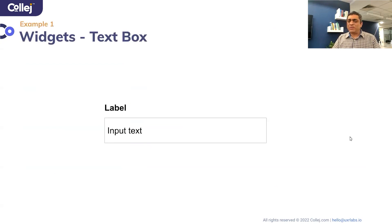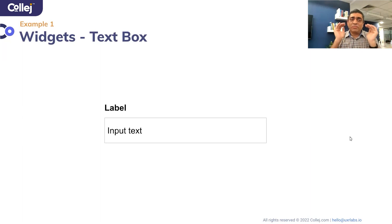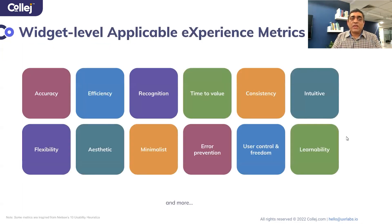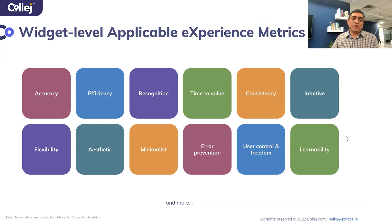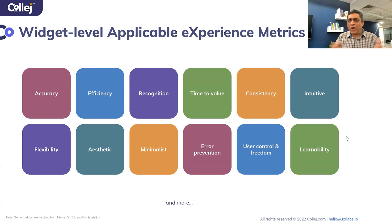Let's think about something as simple as a text box, and how would you design it? First, let's think about what objectives we are trying to solve for. At a very abstract level, there are many objectives you can optimize for: accuracy, efficiency, recognition, time to value, consistency, and so on. The question is how do you decide which of these metrics are going to be important for you? That's the first step — stepping back and asking why you're doing what you're doing.